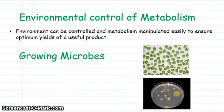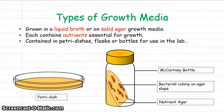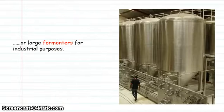When growing the microbes, they need an energy source for growth. In terms of unicellular algae, this could be light or some kind of substance on a growth medium. Looking at the different types of growth media, microbes can be grown in liquid broth or solid agar, such as solid agar in a Petri dish or in a McCartney bottle as a nutrient agar slope. Of course, microbes can also be grown on an industrial scale in fermenters.